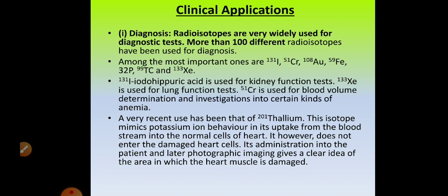Radioisotopes are very widely used for diagnostic tests in clinical applications. More than 100 different radioisotopes are used for the diagnosis of diseases. Important ones are iodine-131 (I-131), chromium-51 (Cr-51), gold-198 (Au-198), iron-59 (Fe-59), phosphorus-32 (P-32), technetium-99, and xenon-133.